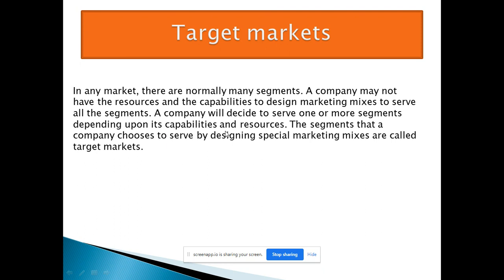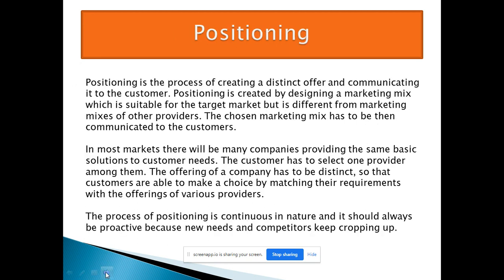A company will decide to serve one or more segments depending on its capabilities and resources. The segments that a company chooses to serve, by designing a special marketing mix, are called the target market. For example, a company may target only shopping mall customers, only automobile customers, or only two-wheeler dealer customers — you have to decide and target accordingly.